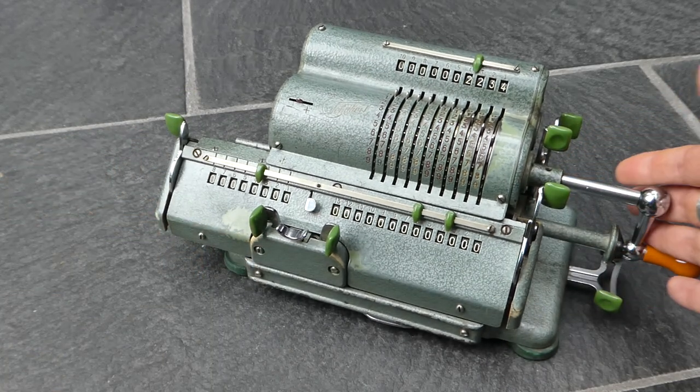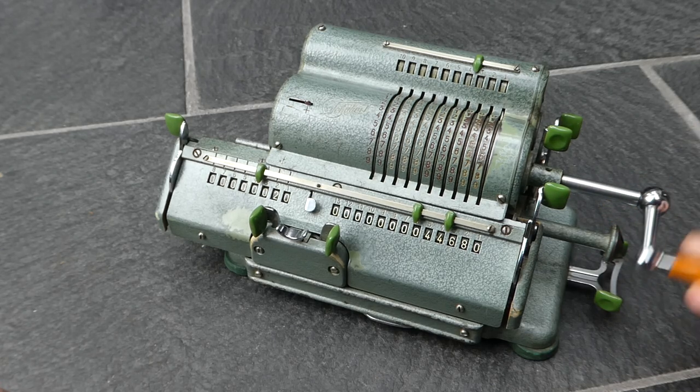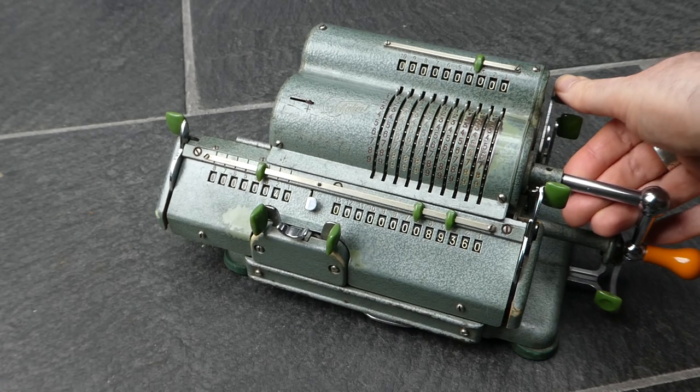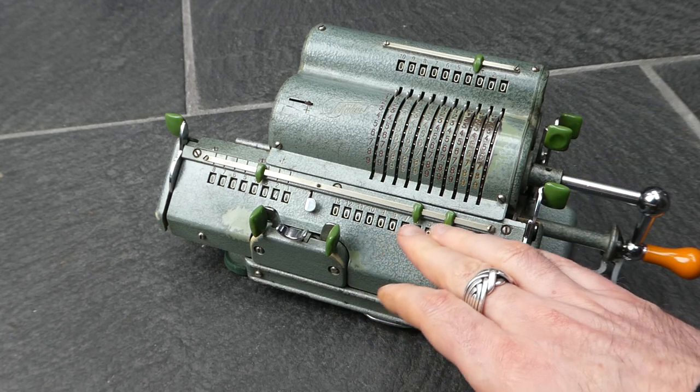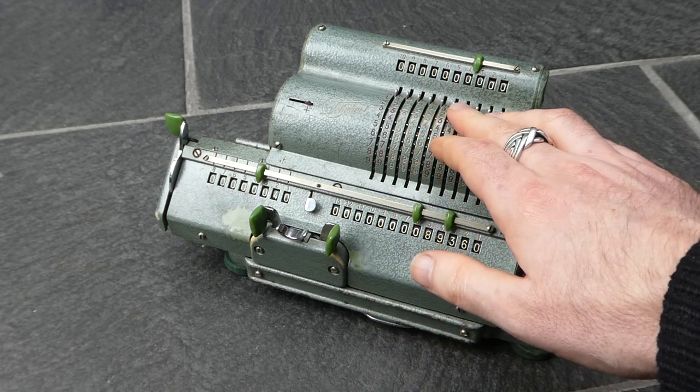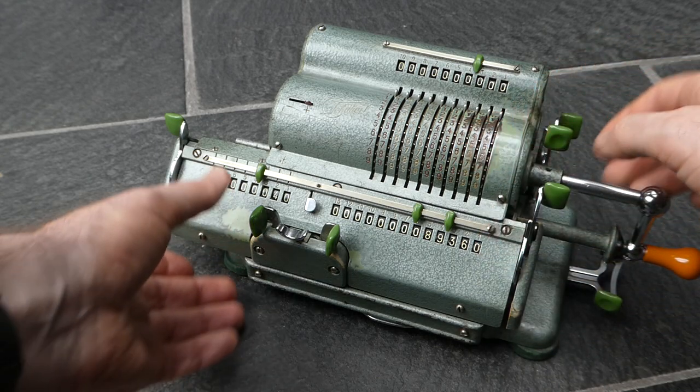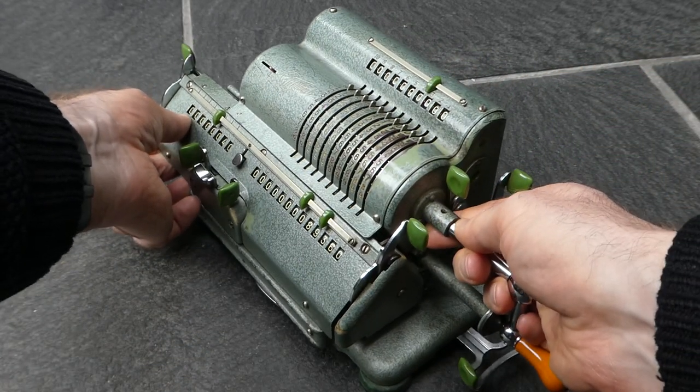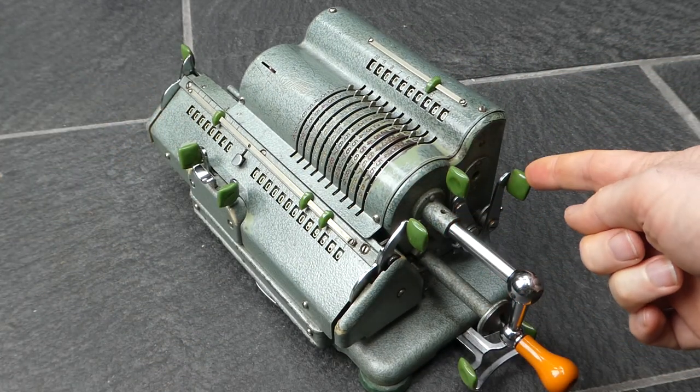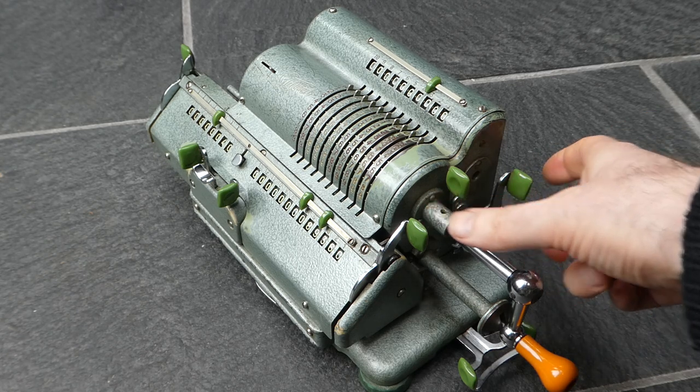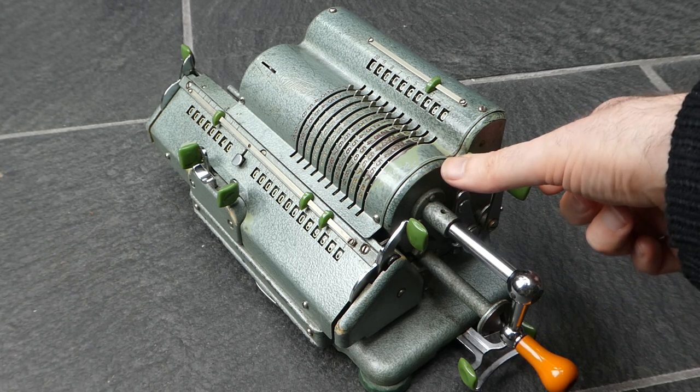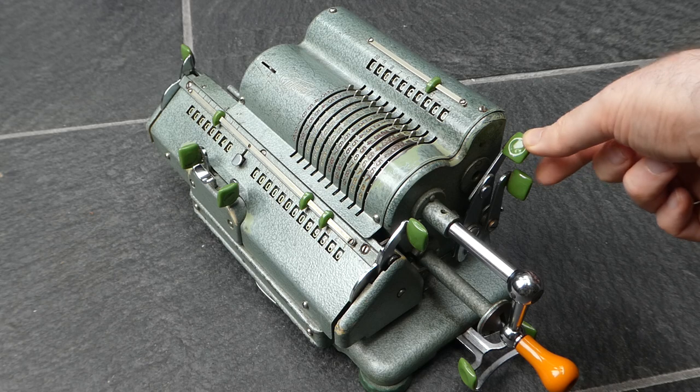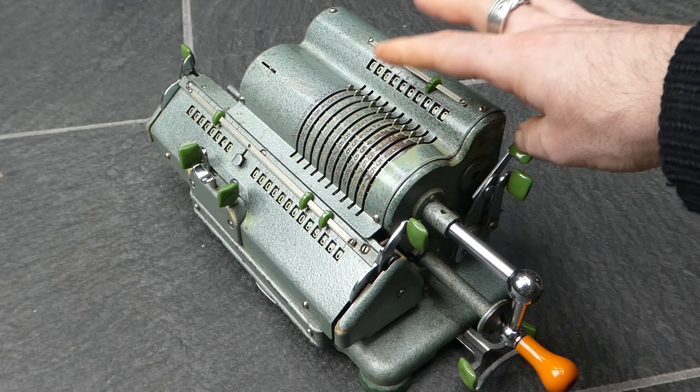This machine also has a back transfer mechanism. This number can be transferred back into the input, and that is this lever back here. To activate it, you have to push the input clearing lever forward first so that the input is cleared.